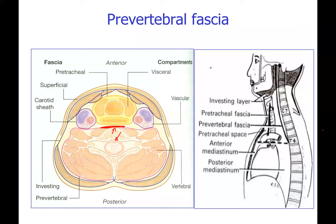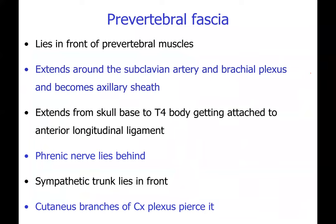The phrenic nerve lies immediately in front of the scalenus anterior muscle, covered in front by the prevertebral fascia. The sympathetic chain lies in front of the prevertebral fascia but medial to the phrenic nerve. The phrenic nerve is between the prevertebral fascia and the scalenus anterior muscle — it crosses the scalenus anterior muscle in front in a typical dissection appearance. The sympathetic chain lies in a position in front of the prevertebral fascia and medial to the phrenic nerve.